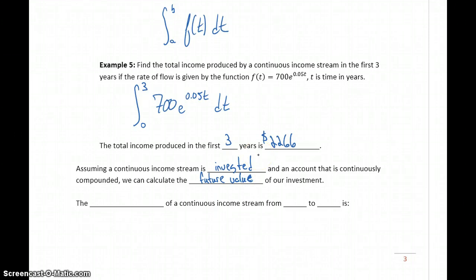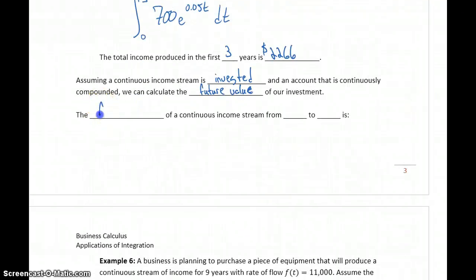So meaning calculating the money that we're bringing in from that income stream, as well as the interest that we're earning on those investments. This concept of future value for some continuous income stream, from some time t equals 0 to some final time, lowercase t equals capital T, is calculated as e to the rT times the integral from 0 to capital T.